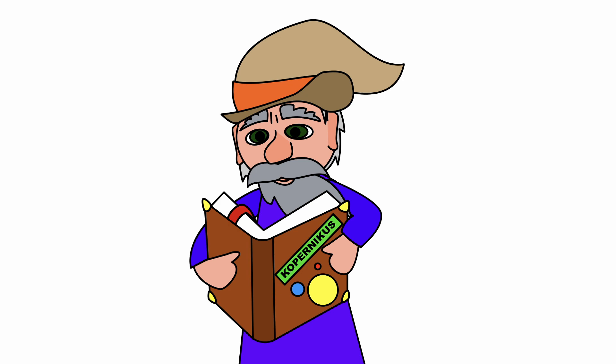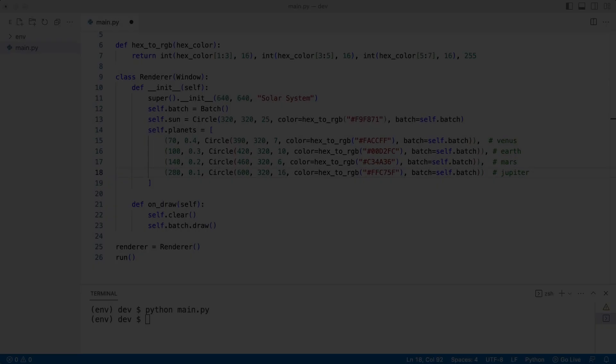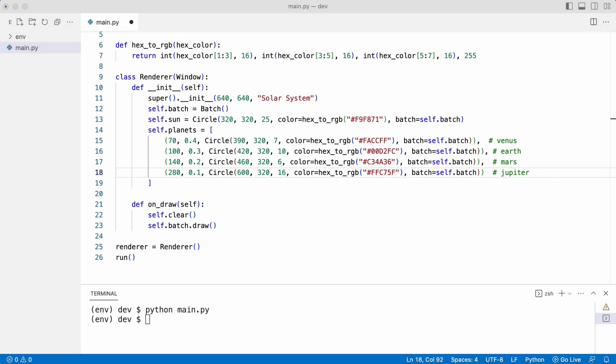To add motion to the system an update method needs to be added. When the update method is called a delta time is passed. Delta time is the time that passed since the last update. By using the delta time when calculating positions you ensure smooth animations.